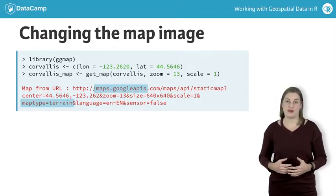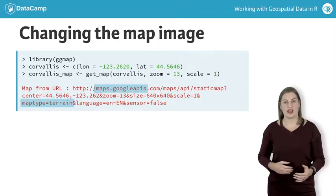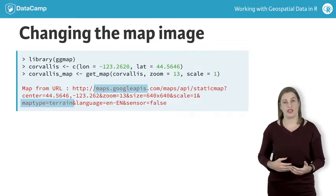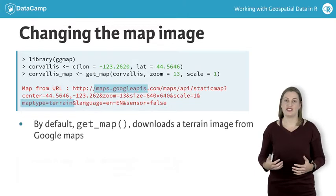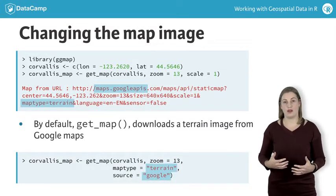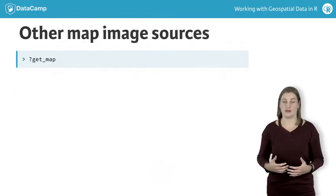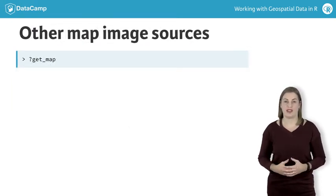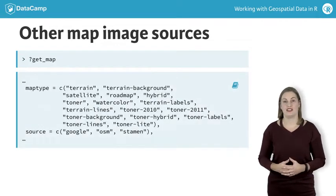In getmap, the source and type of map is controlled by the map_type and source arguments. For example, the default is to download a terrain map from Google. To see the available options for the map_type and source arguments, you can take a look at the help for getmap. In the usage section, you'll find all the possibilities.